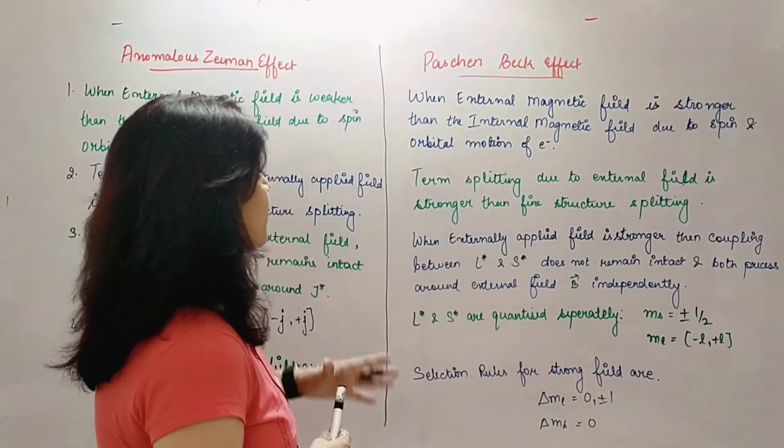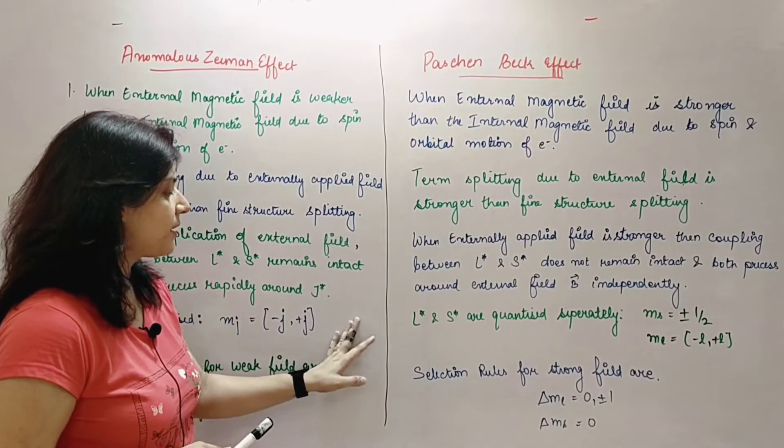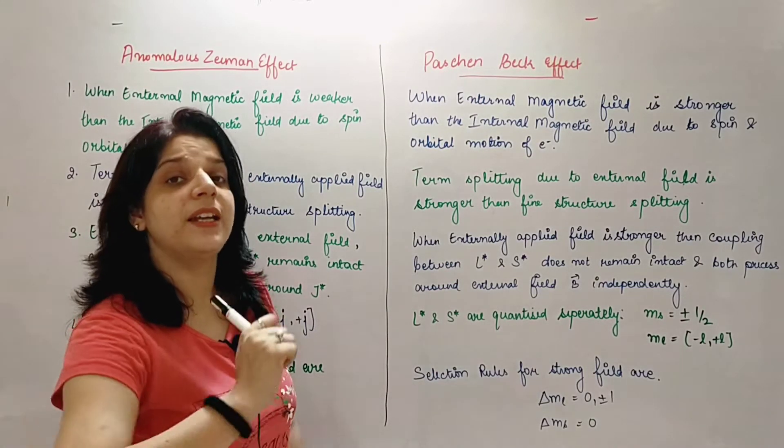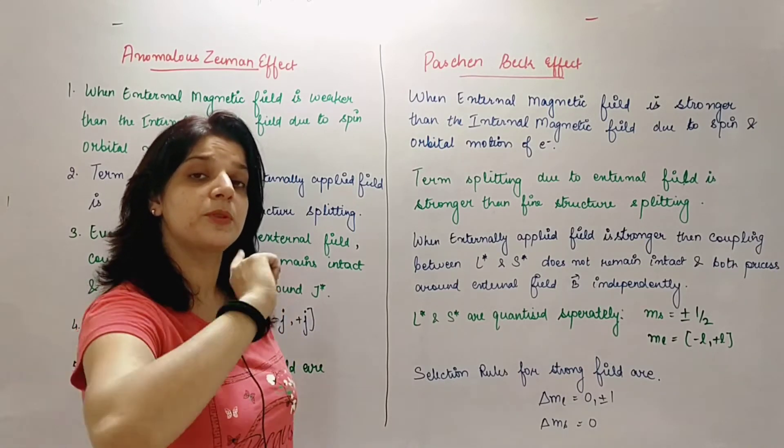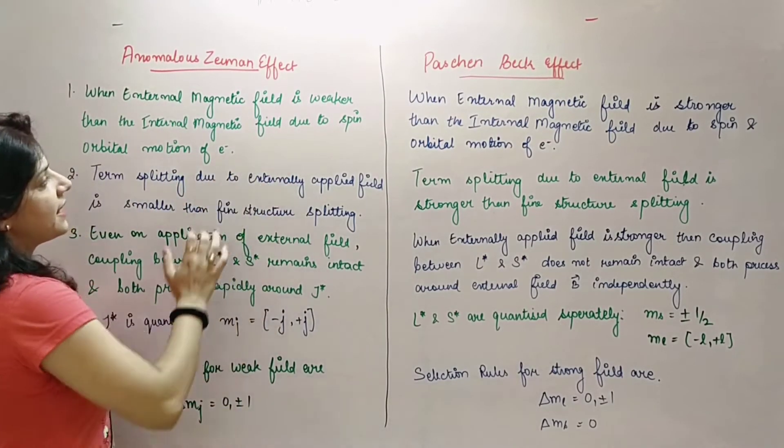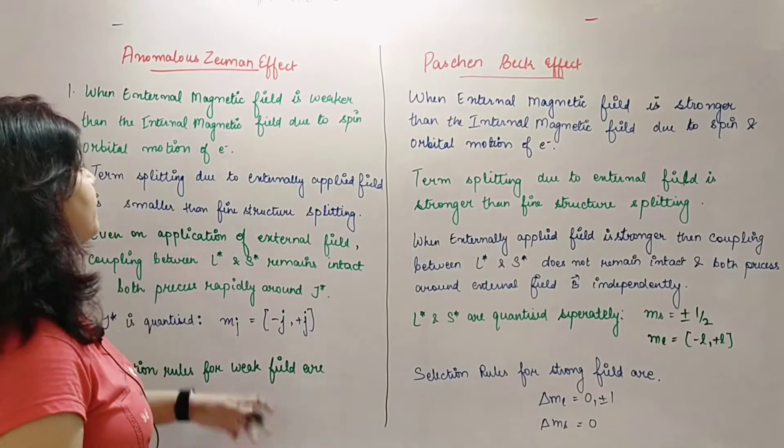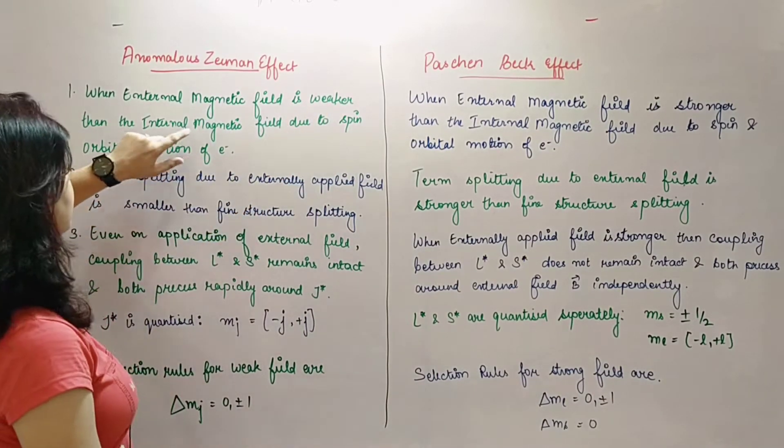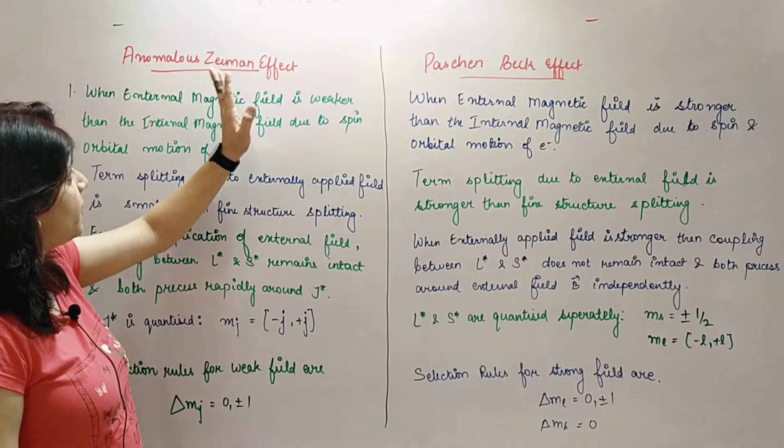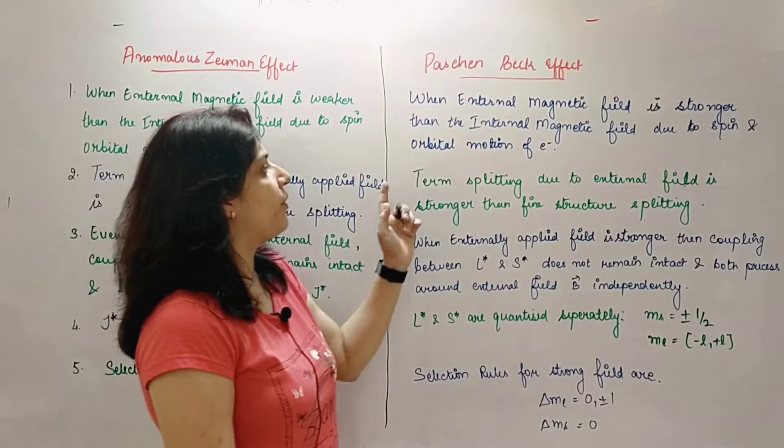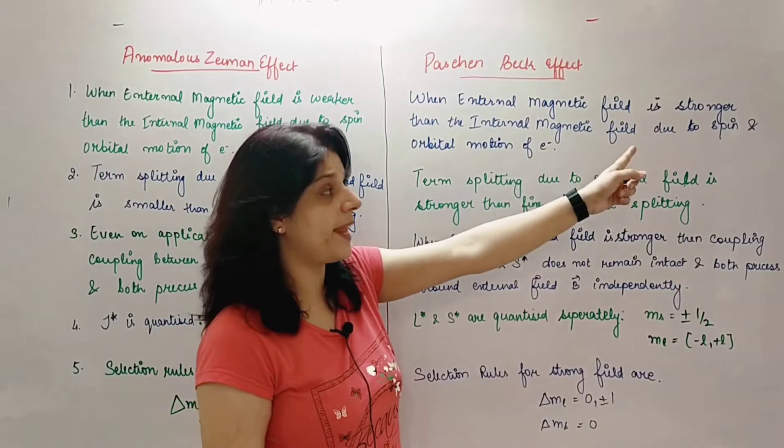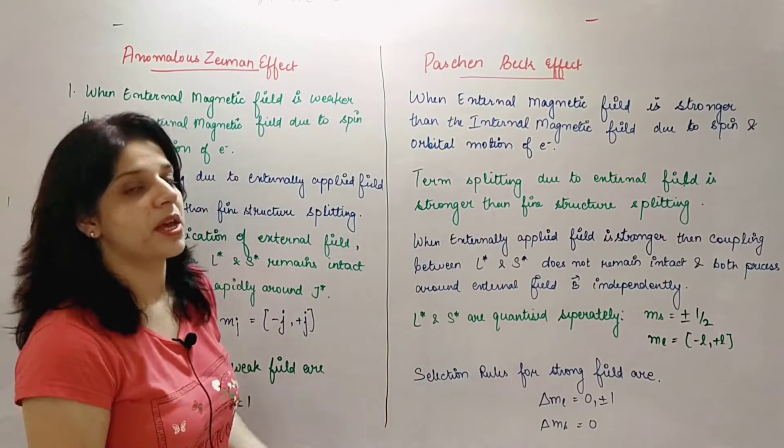Now, what happens is, when I am talking about anomalous Zeeman effect, in that case my externally applied magnetic field is weaker than internal fine structure. Fine structure means spin and LS coupling of the electron, which we can say, splitting is less than that field. We'll say, when external magnetic field is weaker than the internal magnetic field due to spin orbital motion of electron, anomalous Zeeman effect is observed. While, when externally applied magnetic field is stronger than the internal magnetic field due to spin LS coupling, in that case we get to see the Paschen-Back effect.